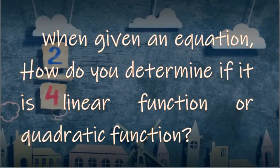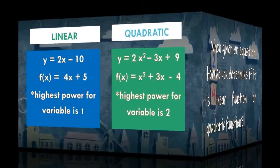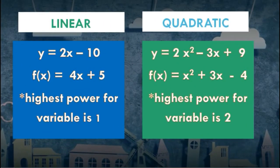When given an equation, how do you determine if it is a linear function or a quadratic function? If the given is an equation, we determine it based on the highest power of the variable. If the highest power of the variable is 1, it is a linear function. If the highest power of the variable is 2, then it is a quadratic function.